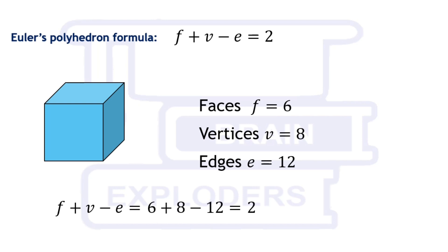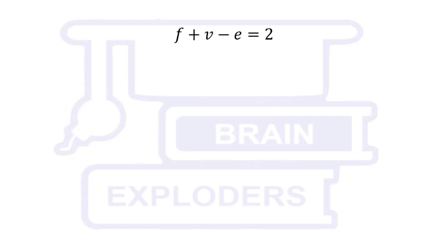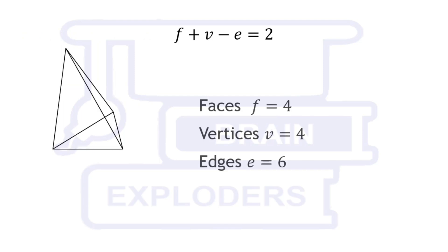Is it true for all 3D shapes? Let's check. Let's take another shape. It has 4 faces, 4 vertices and 6 edges. So 4 plus 4 minus 6 is equal to 2. It's a tetrahedron and this equation is true for this tetrahedron also.